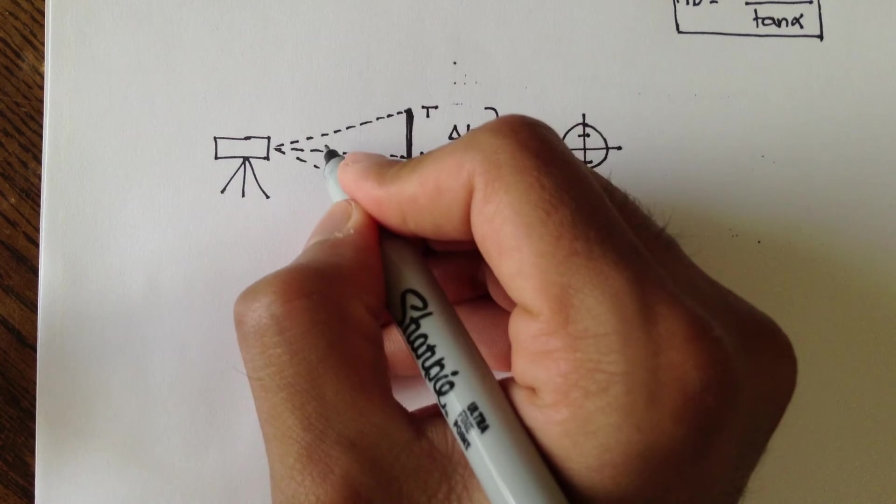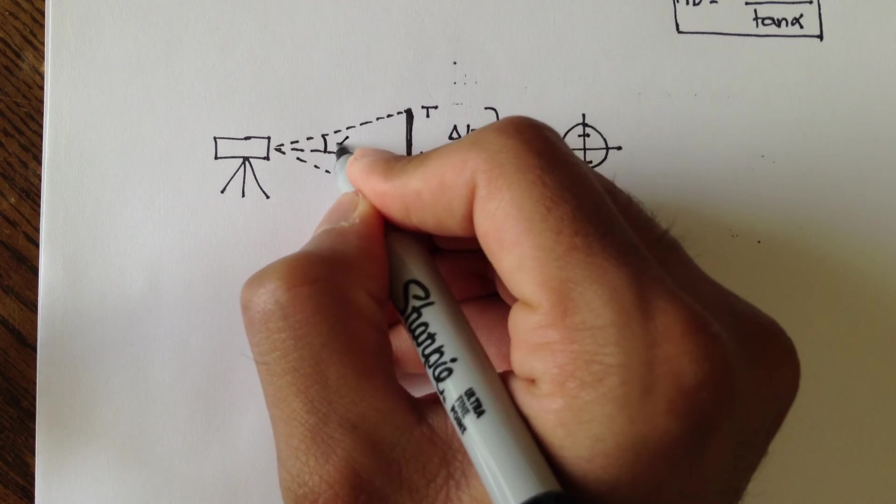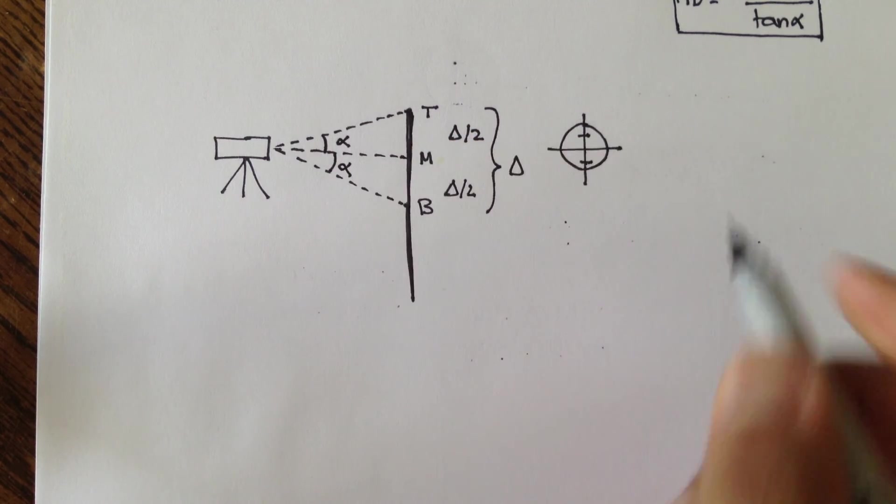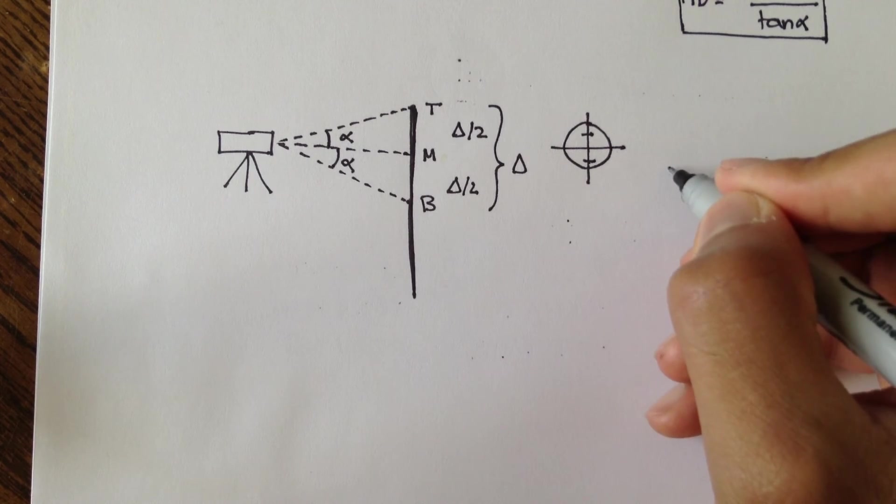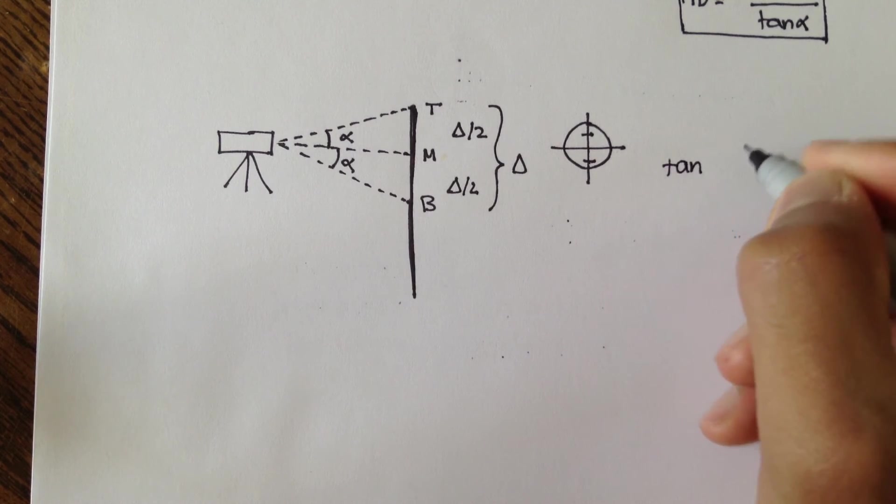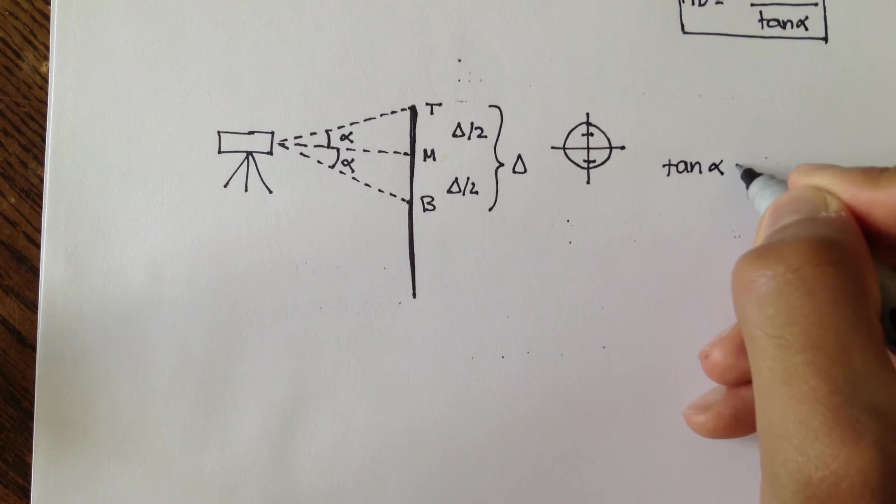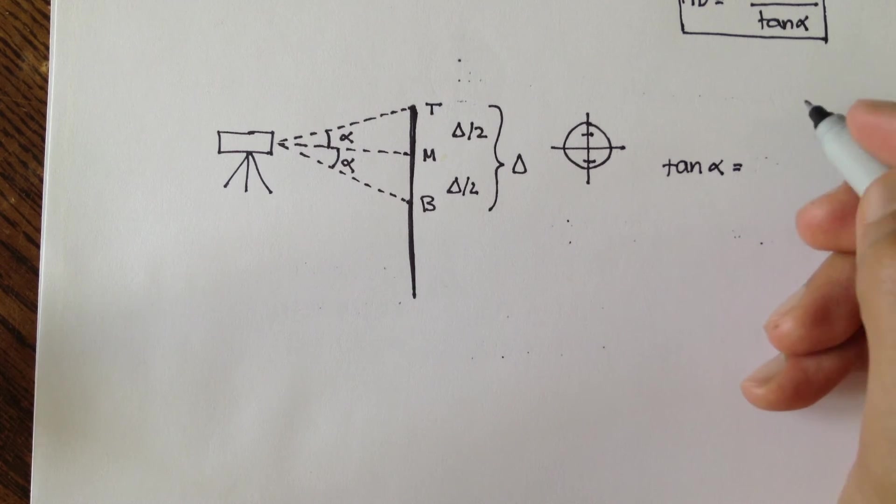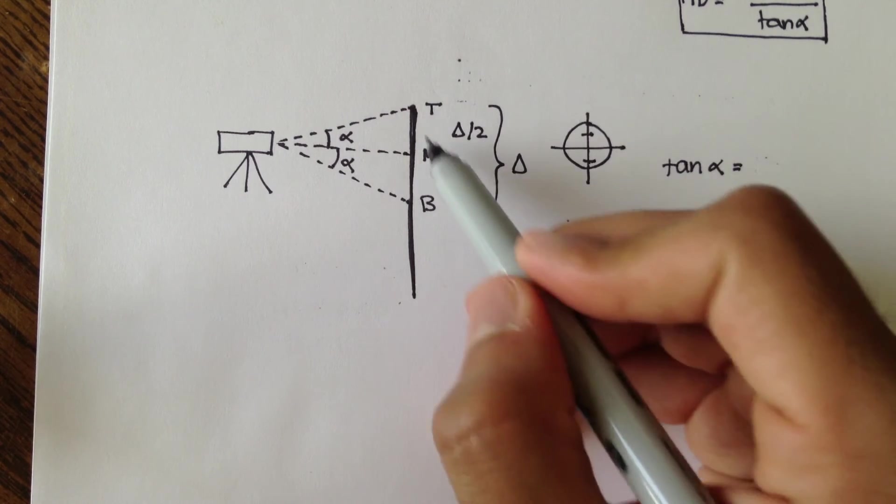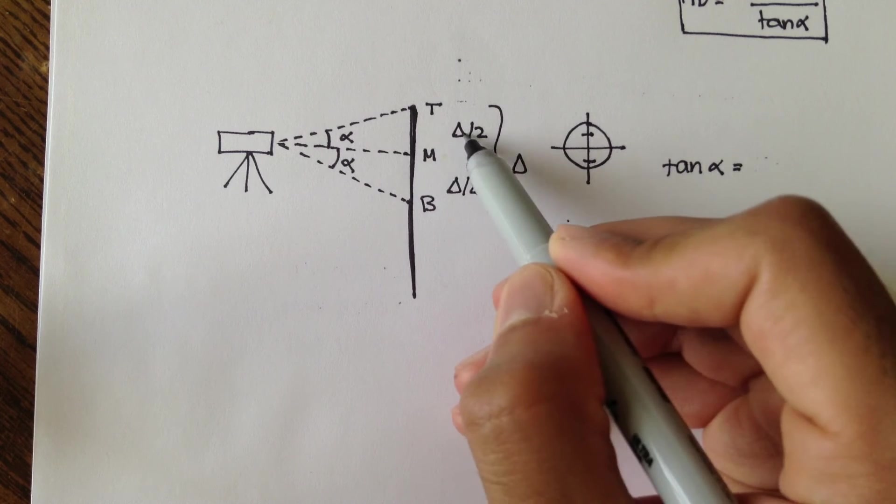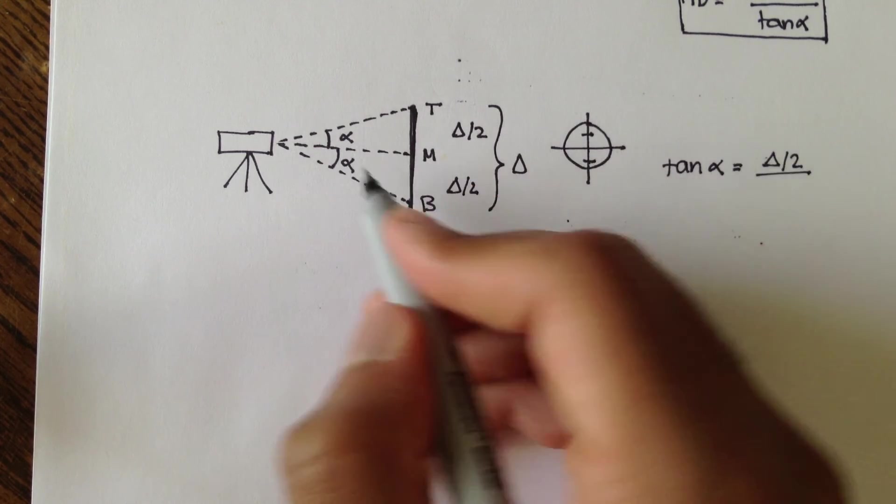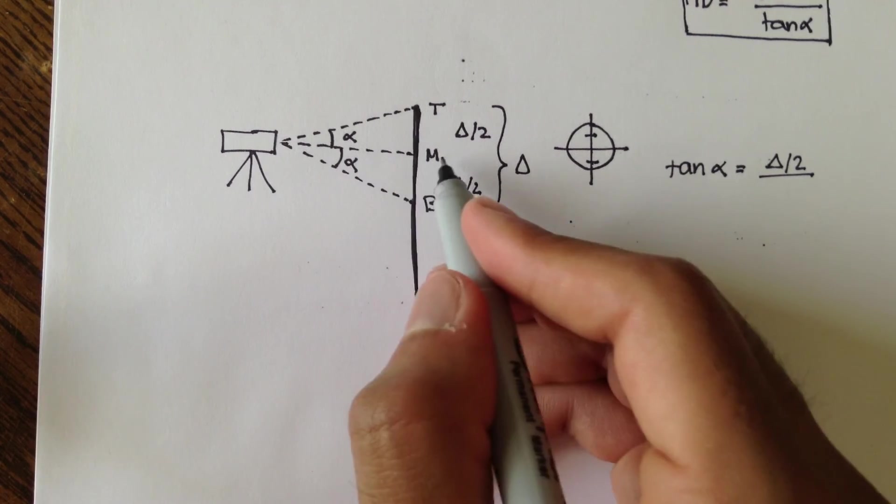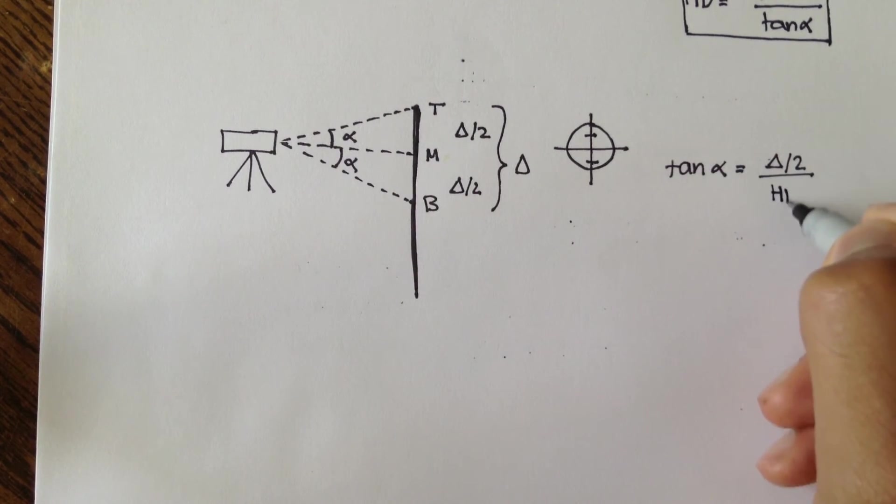Now, if this angle should be the same, alpha, if we said tangent of alpha is equal to opposite over adjacent, opposite is half stadia, delta over 2, and the adjacent side is your horizontal distance. So, it's from the instrument to the middle reading.